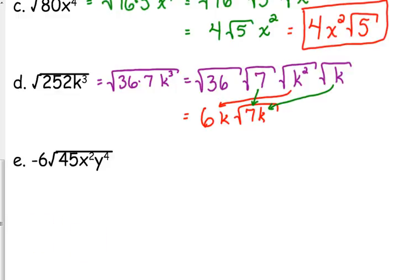Let's do one more like this. -6√(45x²y⁴). Again, leave that coefficient of 6 out front for right now. 45 would be 9 times 5. X² is even, so we'll leave it. Y⁴ is even, so we don't have to split that one up either.